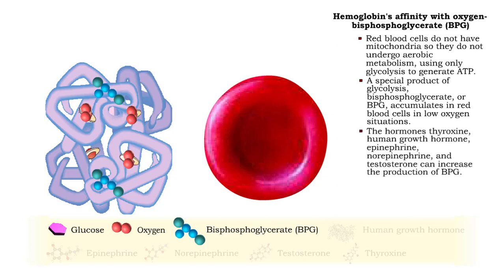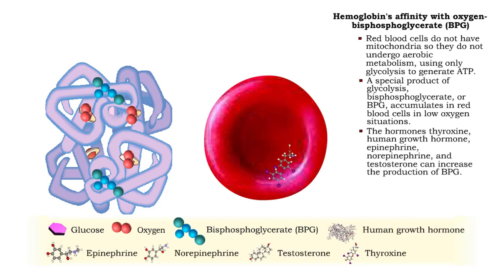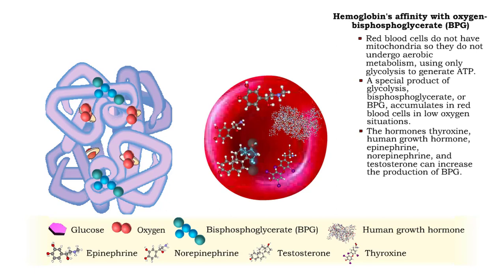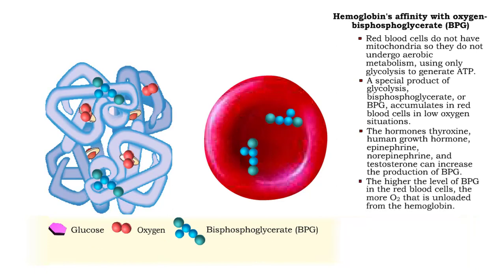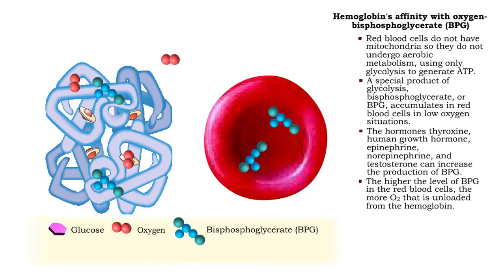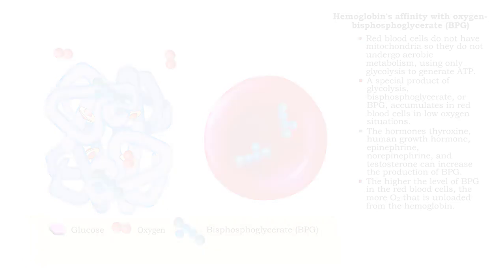The hormones thyroxine, human growth hormone, epinephrine, norepinephrine, and testosterone can increase the production of BPG. The higher the level of BPG in the blood, the more oxygen that is unloaded from the hemoglobin.